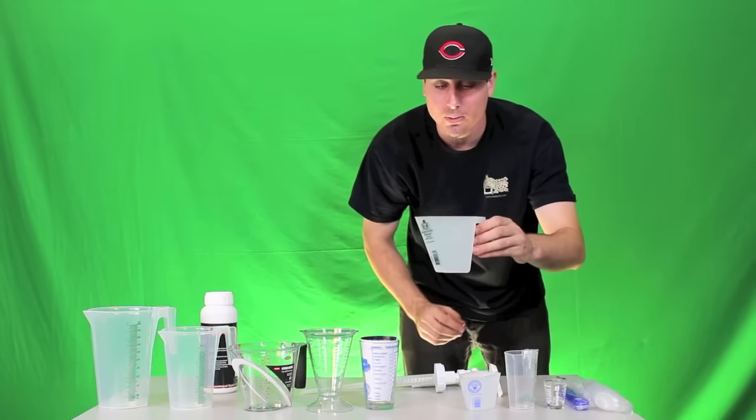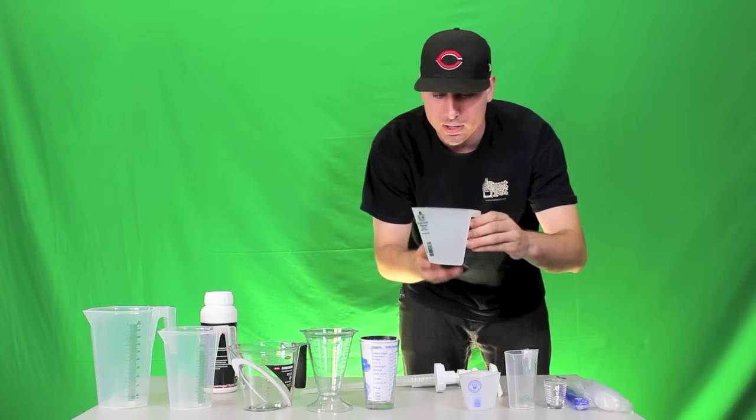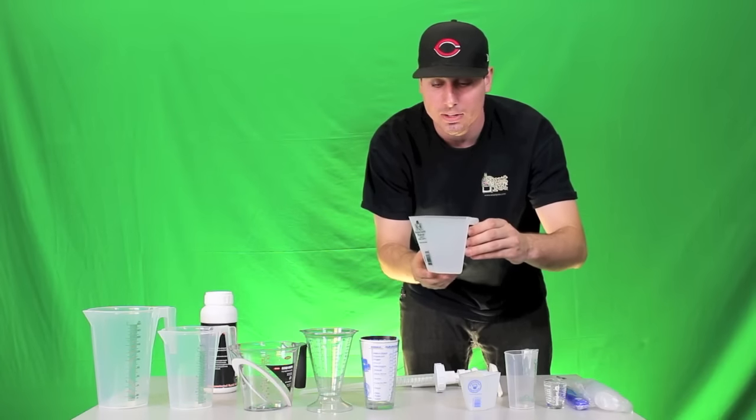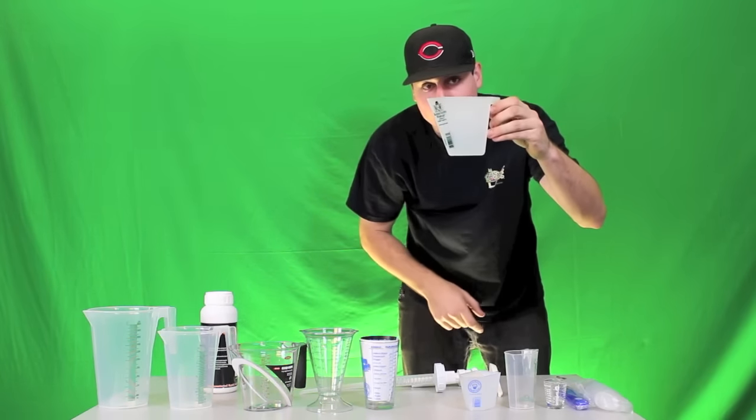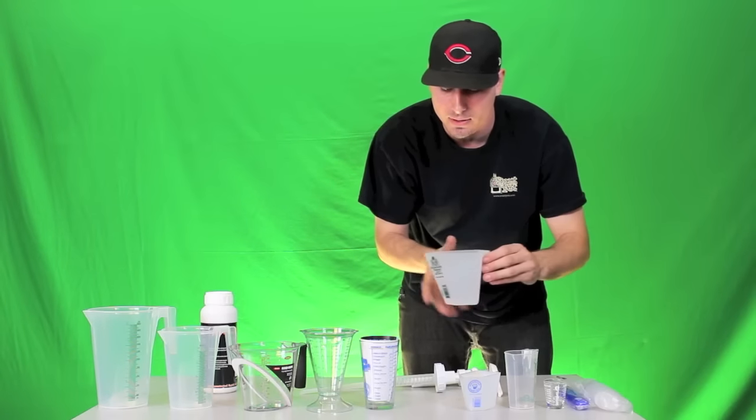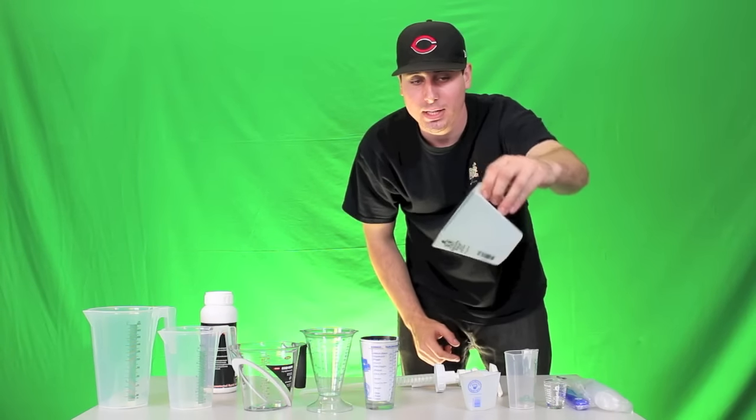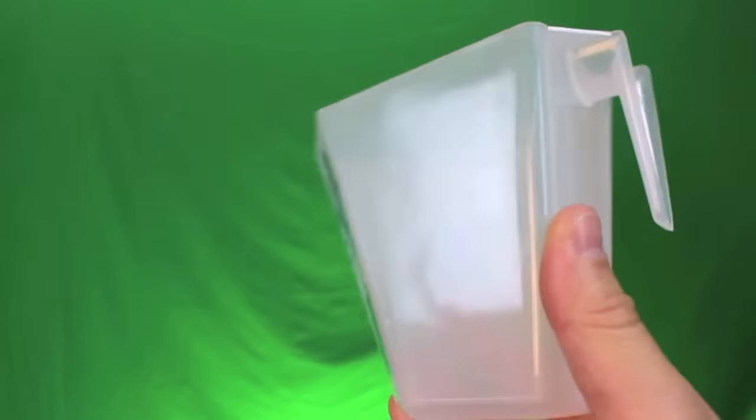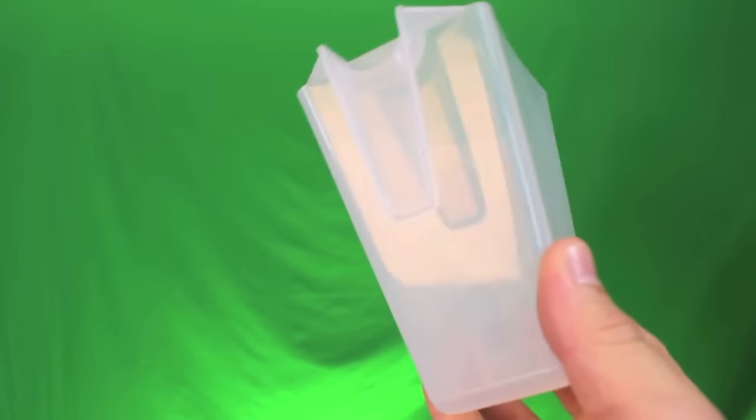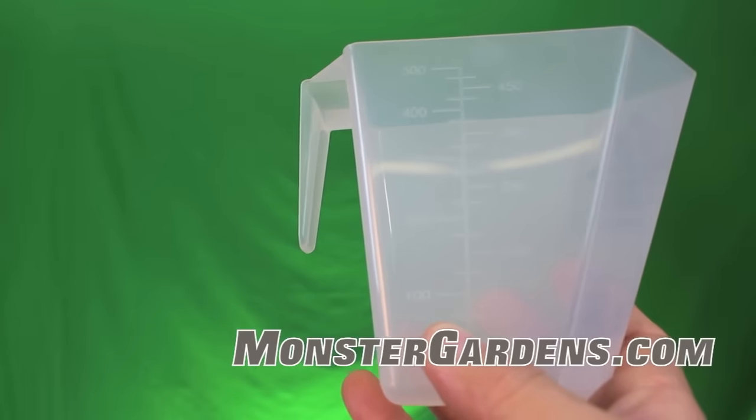This right here is the graduated measuring cup. This one is a 2-cup or 16-ounce measuring cup and it's graduated as you can see it goes down at a slight angle. It has the handle on it and the nice easy to pour spout. It makes for really easy pouring into your reservoir. This one goes all the way from 2 ounces or a quarter cup all the way up to 16 ounces and 2 cups.